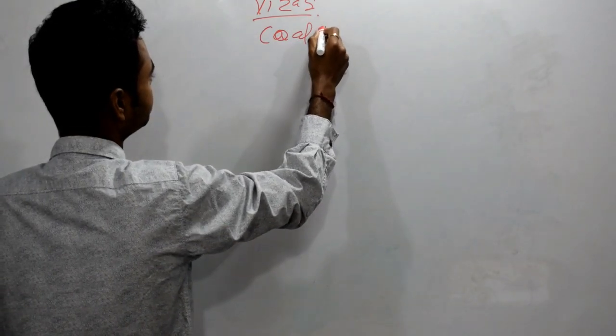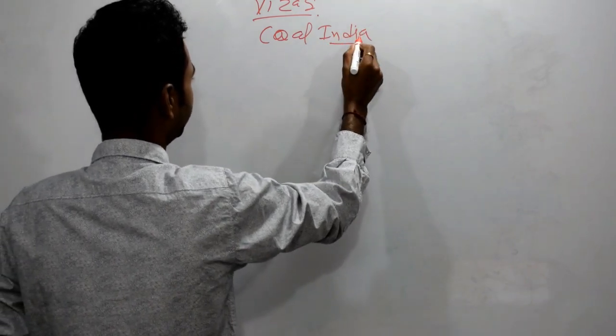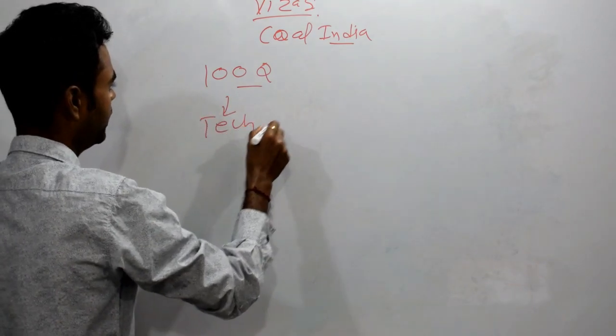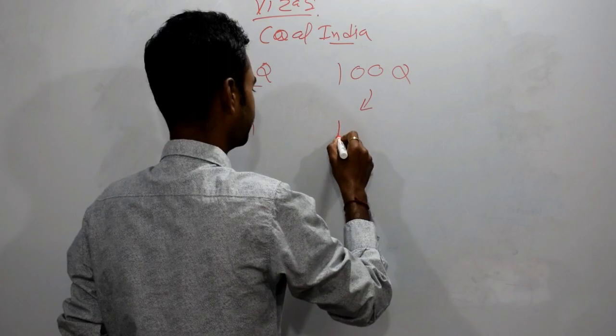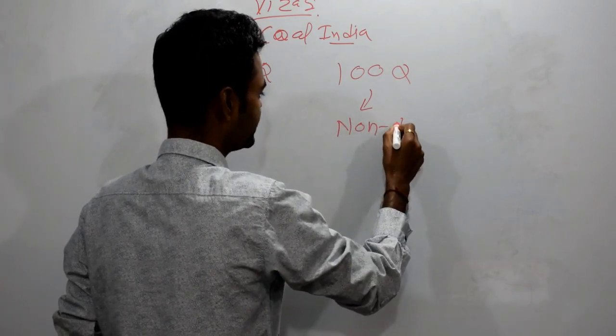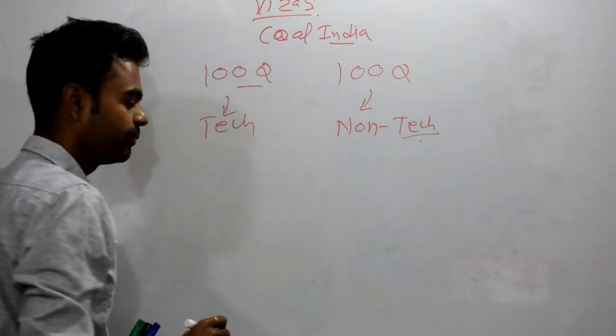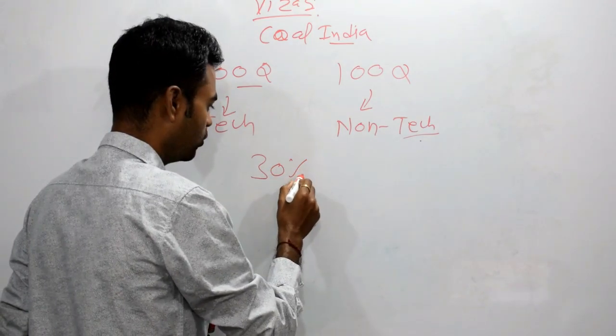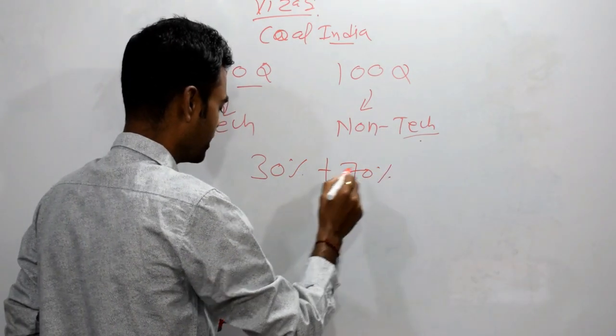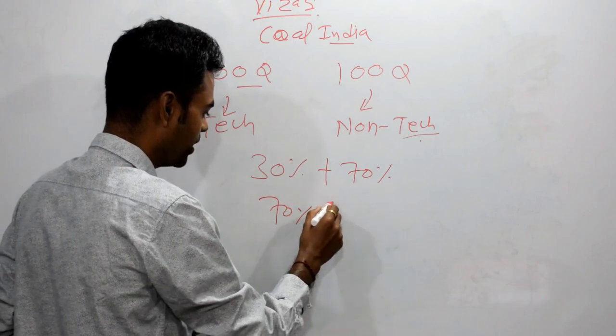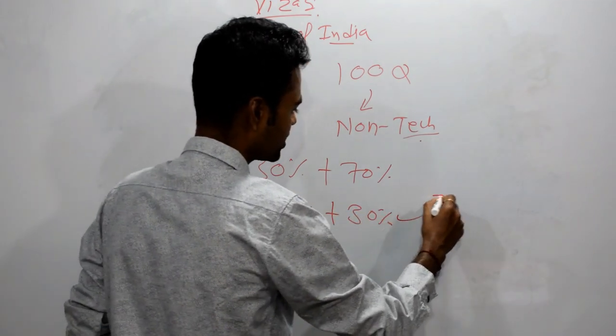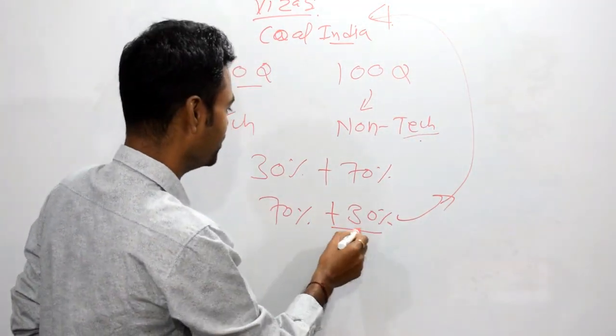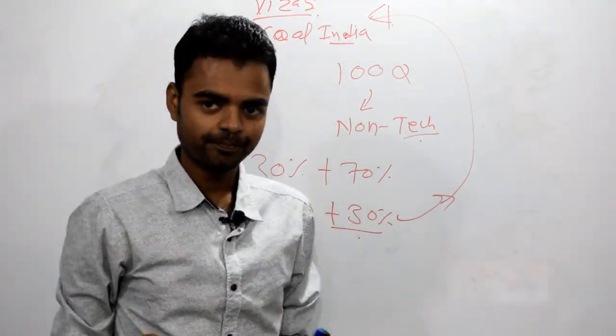100 questions will be from tech section and 100 questions will be from non-tech section. I hope you have studied a little bit in case of Coal India. Now, what you have to do? Maybe you have prepared 30% for Coal India. Now, you have to put effort only 70%. If you prepared 70%, you have to only put effort for 30% for getting into this plant for working there.